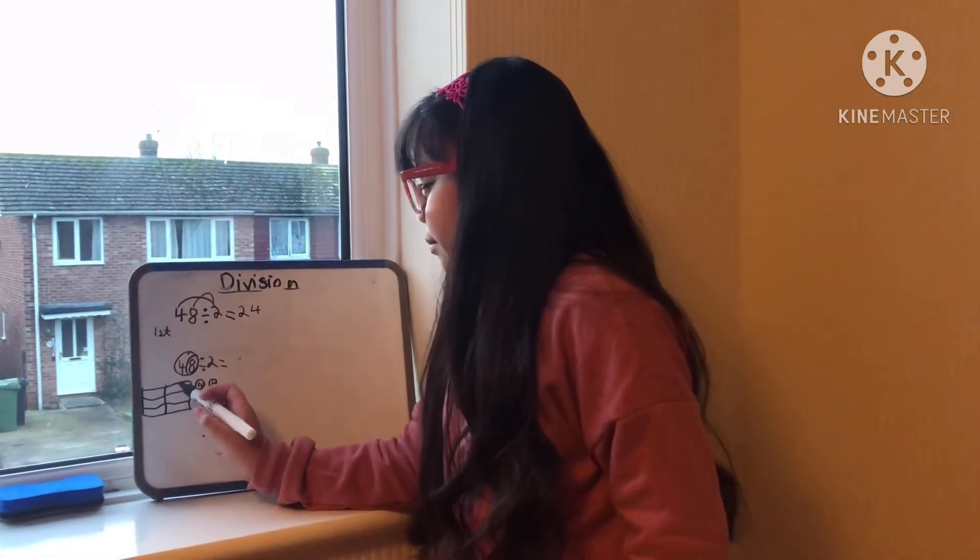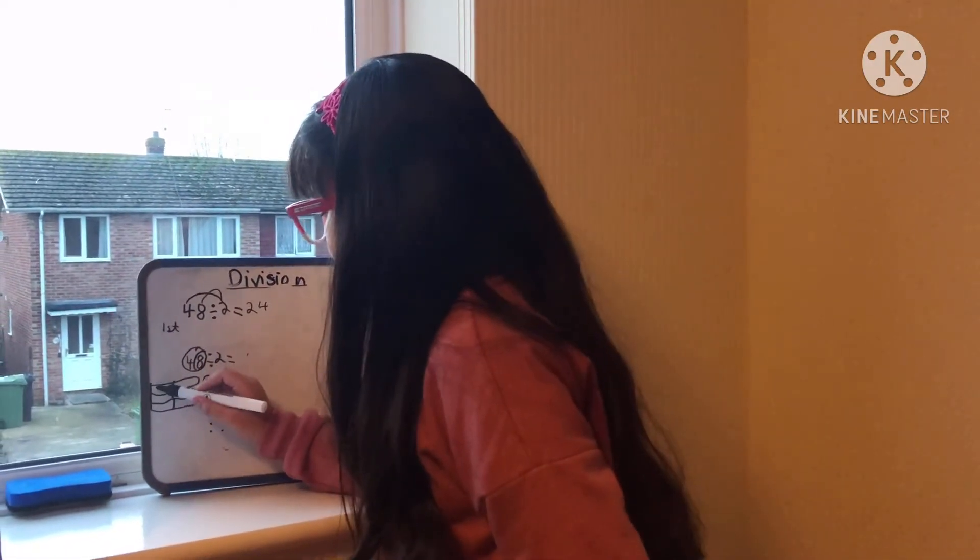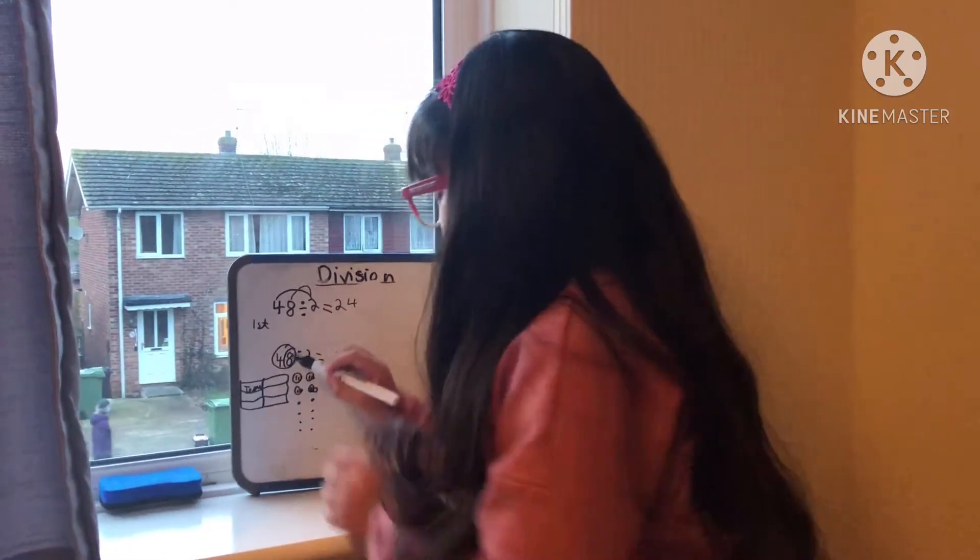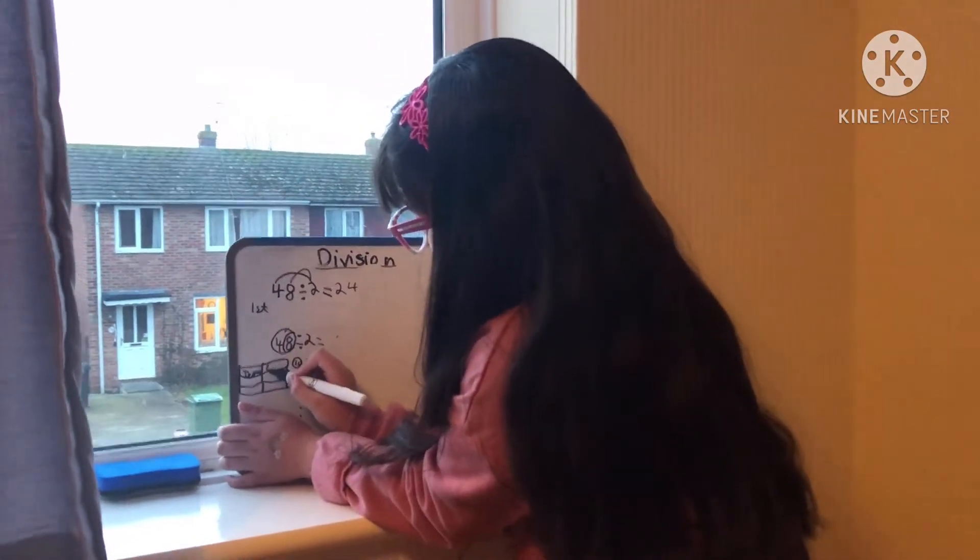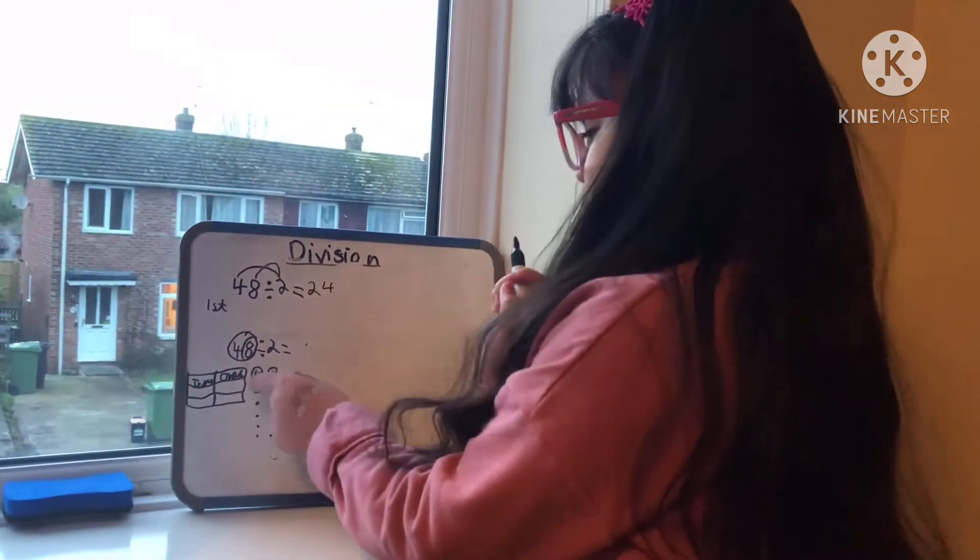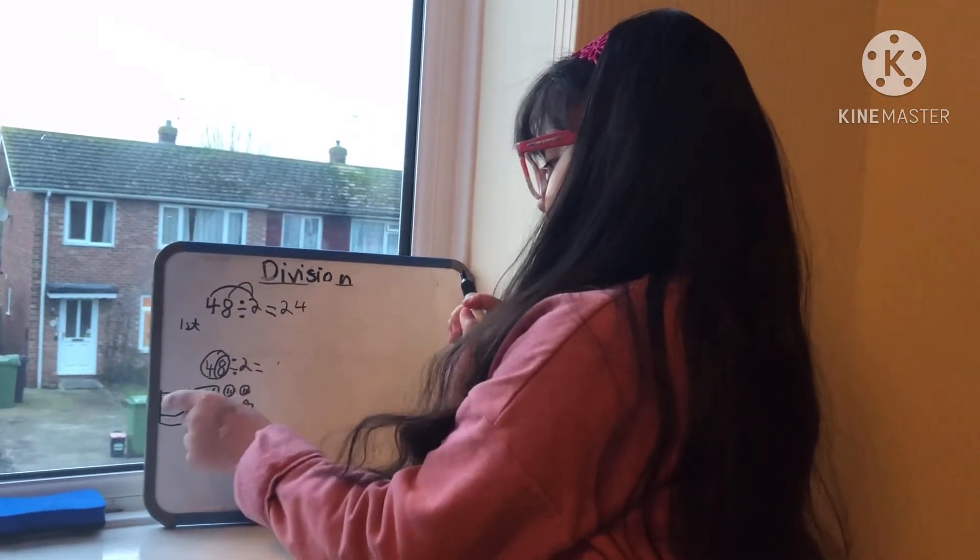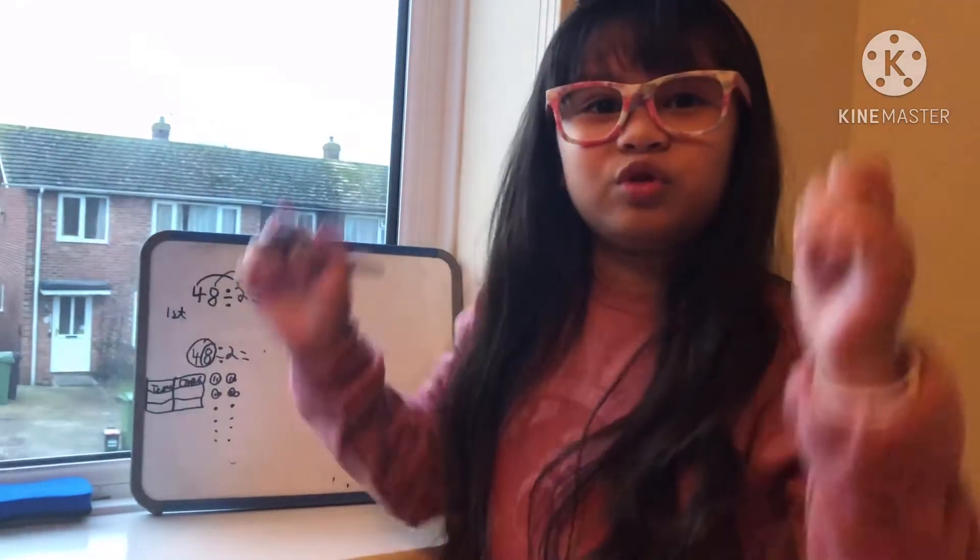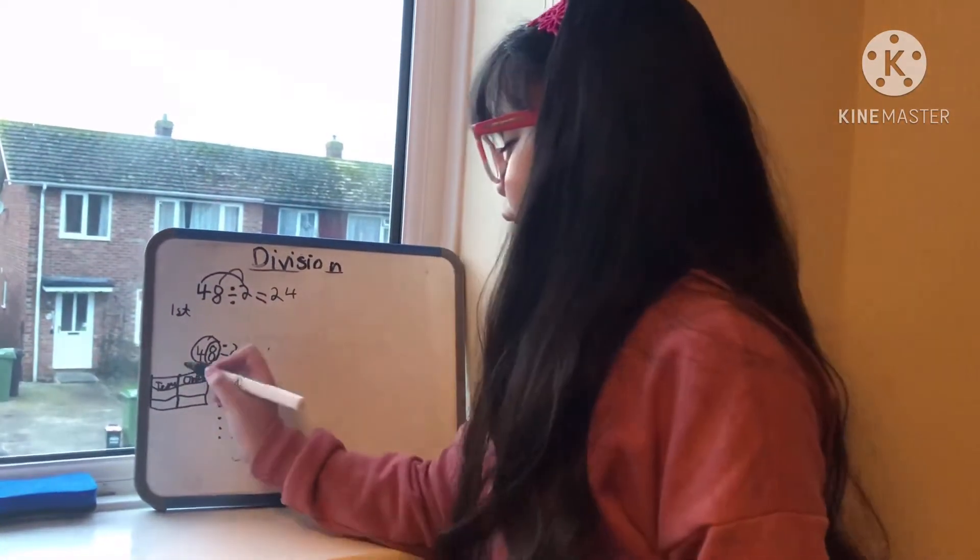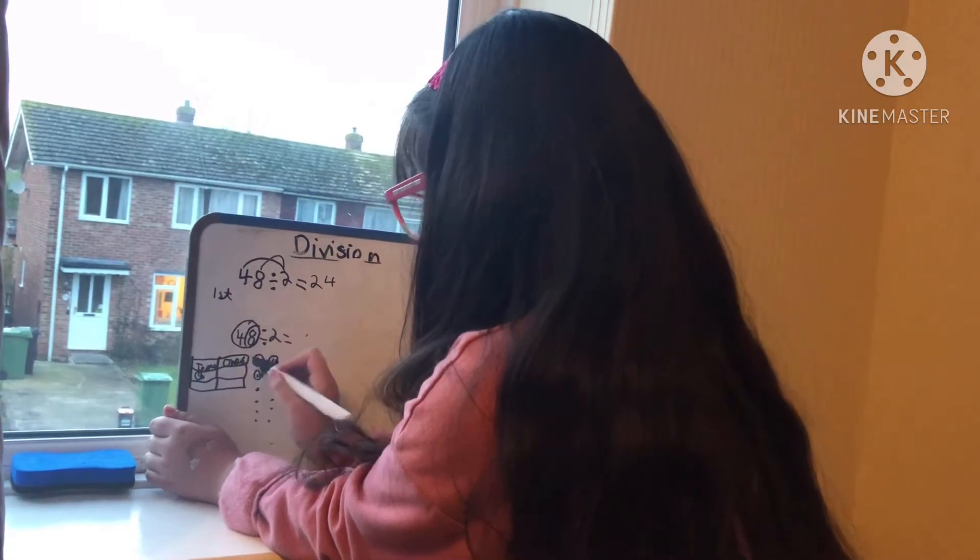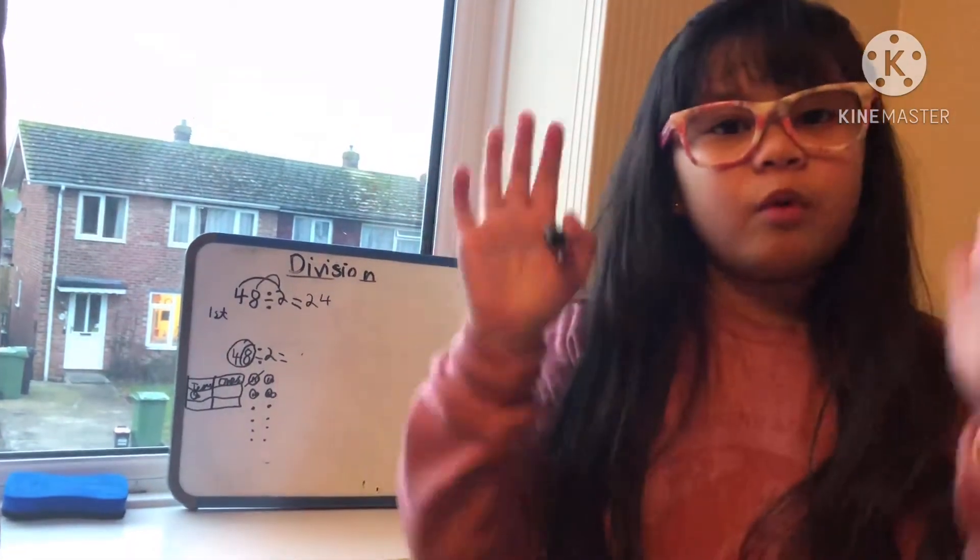We need to write down tens and ones. So we need to copy this 10 first into one of the two rows. We're going to share them equally. Here's our first 10, we need to cross them out so that we won't forget.